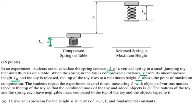The students repeat the experiment several times, measuring h with objects of various masses taped to the top of the toy so that the combined mass of the toy and the added object is m. The bottom of the toy and the spring each have negligible mass compared to the top of the toy and the object taped to it. Derive an expression for the height in terms of mass, compression, and the fundamental constants like acceleration due to gravity.